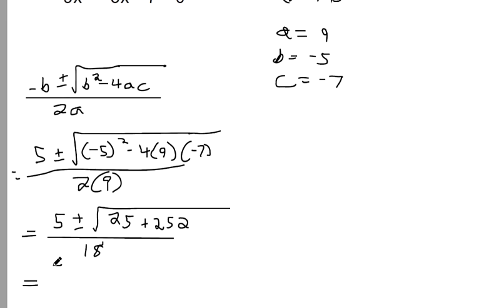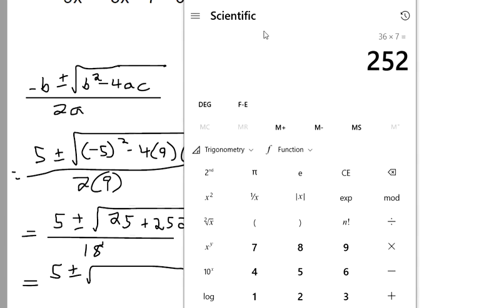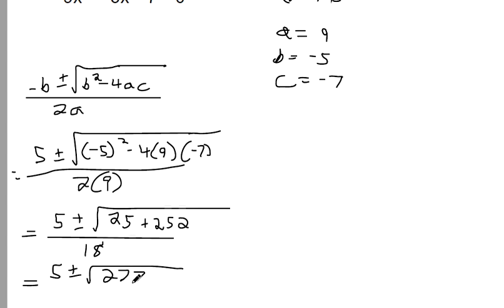And then if we add those two numbers inside the radical, that's 277. And so this is getting close to where our answer is, but we have to simplify the radical usually for online math software.